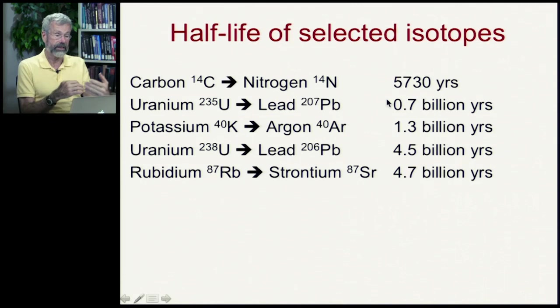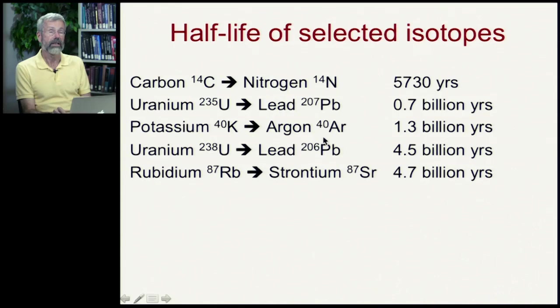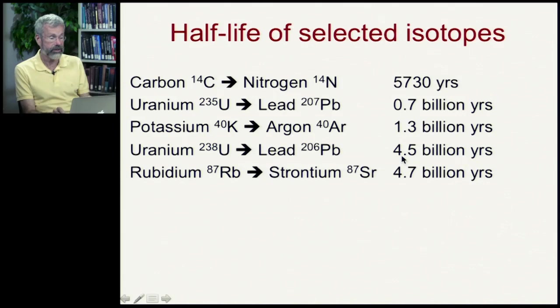Uranium U-235 has a half-life of nearly a billion years, decaying into lead-207. Potassium-40 decays into argon-40 at a rate of about a billion years. U-238 decays to lead-206 at four and a half billion years, and so on. So we've got some things that decay fairly rapidly like carbon-14, and others that are much more stable. Nevertheless, there's a characteristic curve and we can see the ratios of these things in the item and say roughly how long ago it was formed.